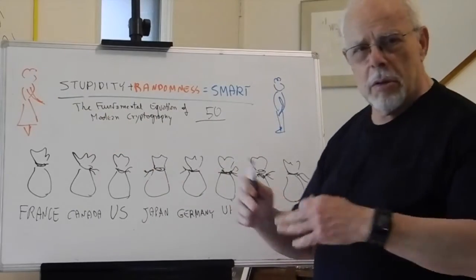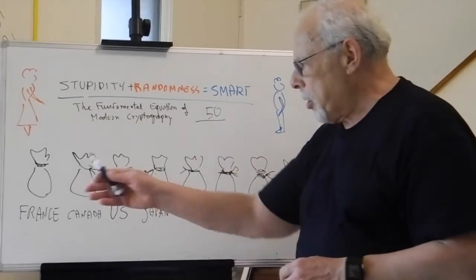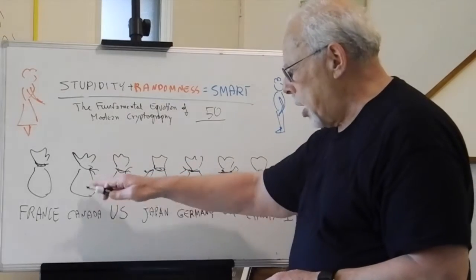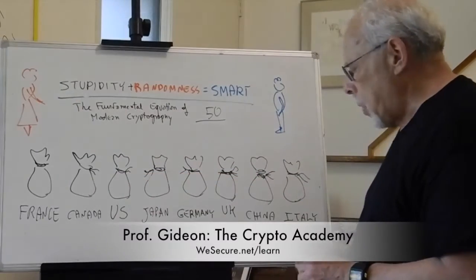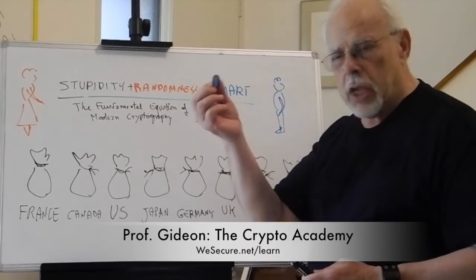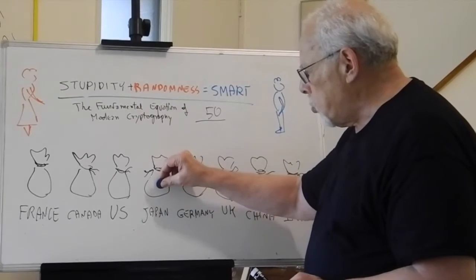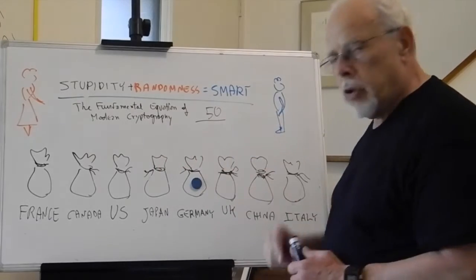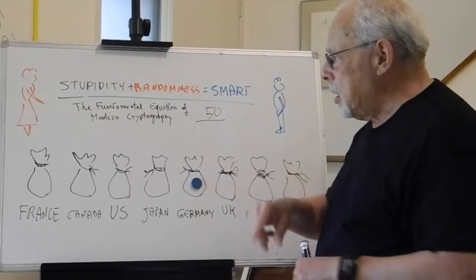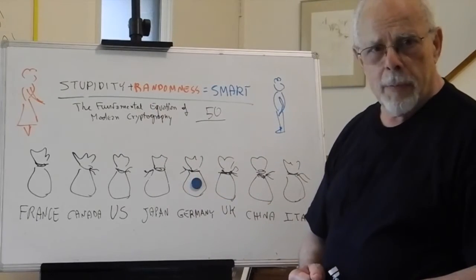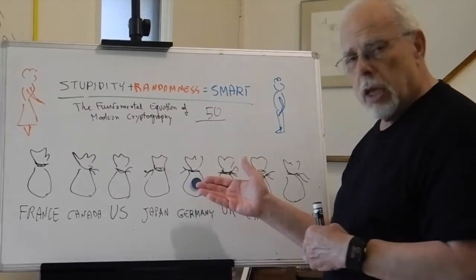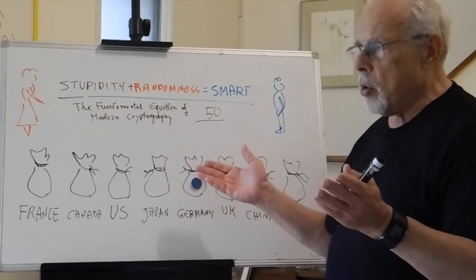Alice and Bob play a game. There are eight bags, each marked by a country. Bob takes a precious ring and puts it in one bag. Alice opens four of those eight bags, and if one of them has the ring in it, she wins.